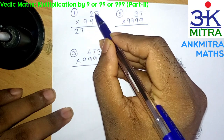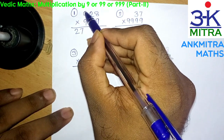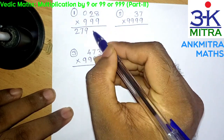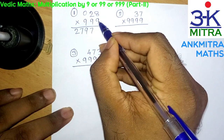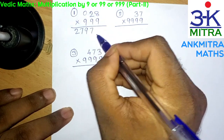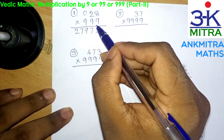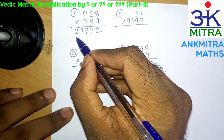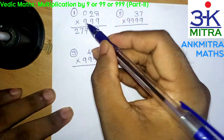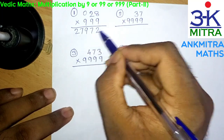Then we subtract 28 from the base for 999, that is 1000. For subtracting 28 from 1000, the trick is very easy — we imagine a 0 here, then 9 minus 0 is 9, 9 minus 2 is 7, and for the final digit we consider this as 10 and 10 minus 8 is 2. So we have the answer for 28 multiplied by 999 as 27,972. Quite easy — we can finish this off in literally 2 seconds.